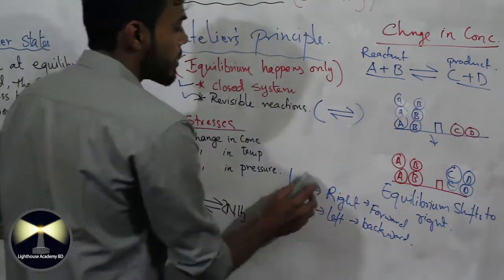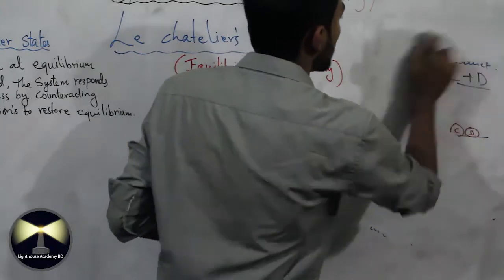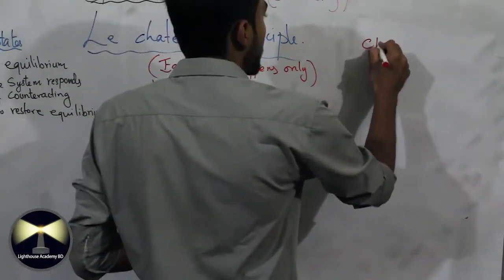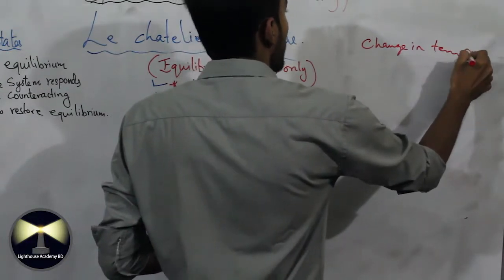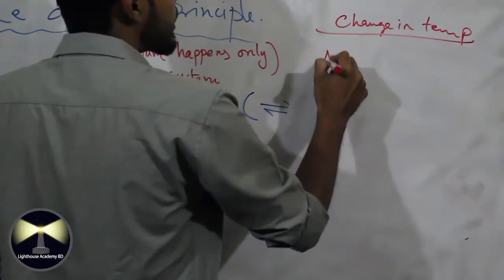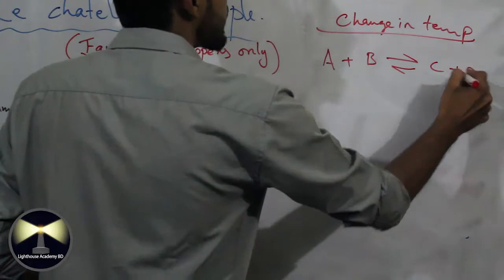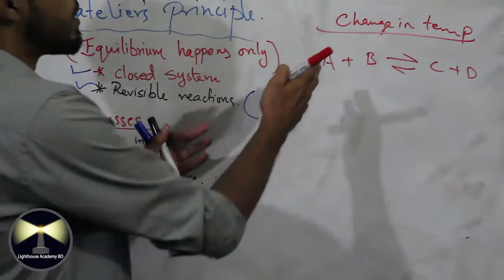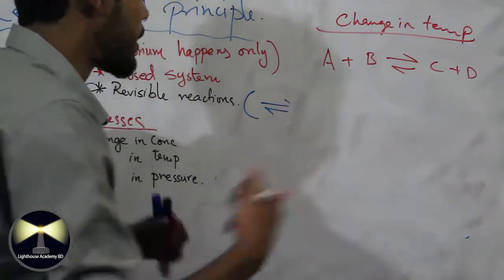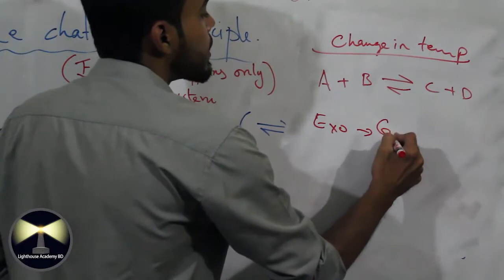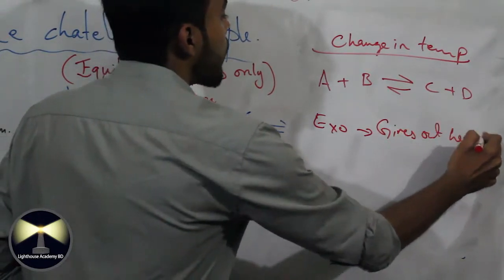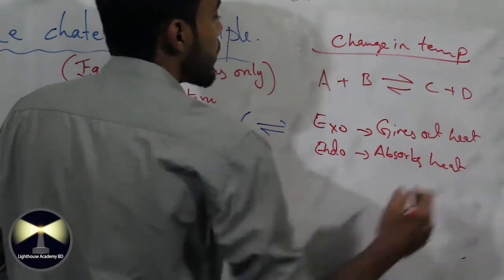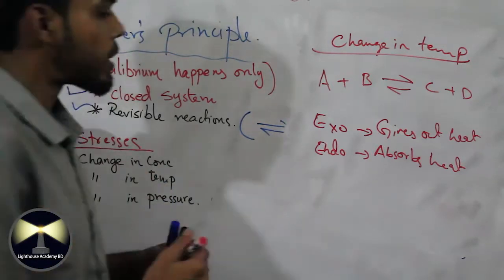Now let's go to the next stress: change in temperature. What will happen to the equilibrium of the system when you change the temperature? For this, you need to know whether the reaction is exothermic or endothermic. Exothermic reactions release heat, and endothermic reactions absorb heat. This is important to determine how the equilibrium will respond.